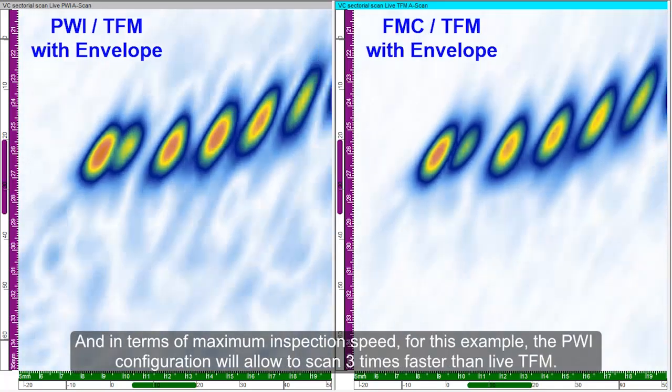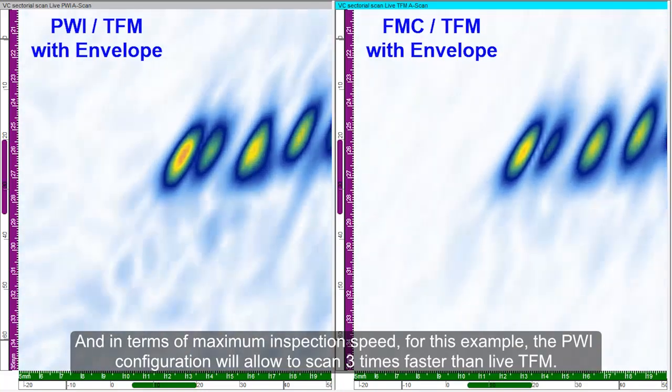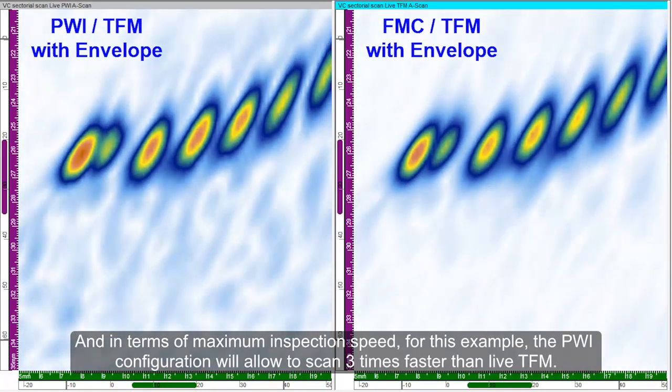And in terms of maximum inspection speed, for this example, the PWI configuration will allow to scan three times faster than regular live TFM.